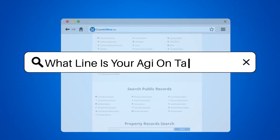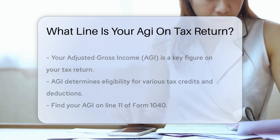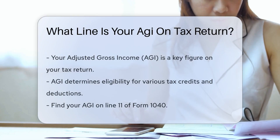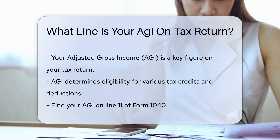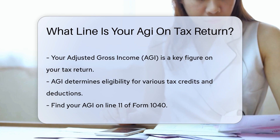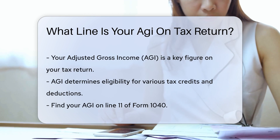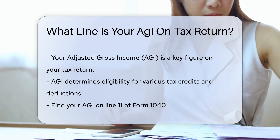What line is your AGI on your tax return? Your adjusted gross income, AGI, can be found on your tax return. It's an important figure that determines various tax credits and deductions.